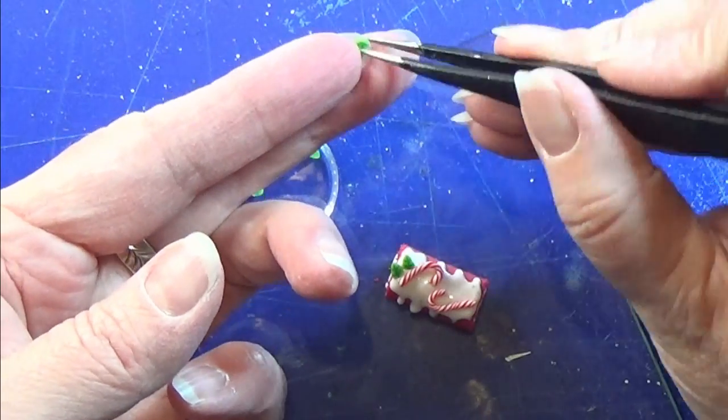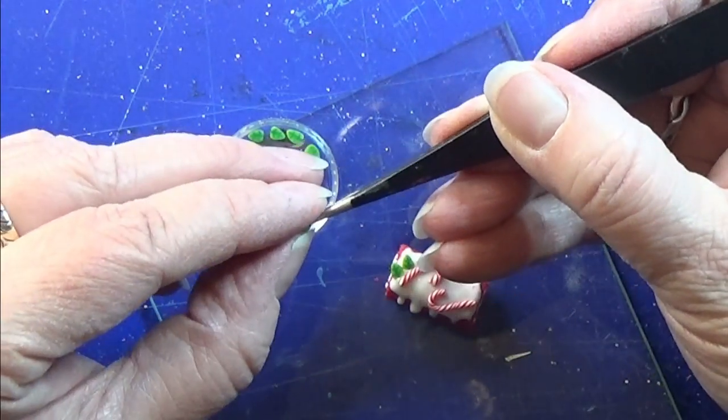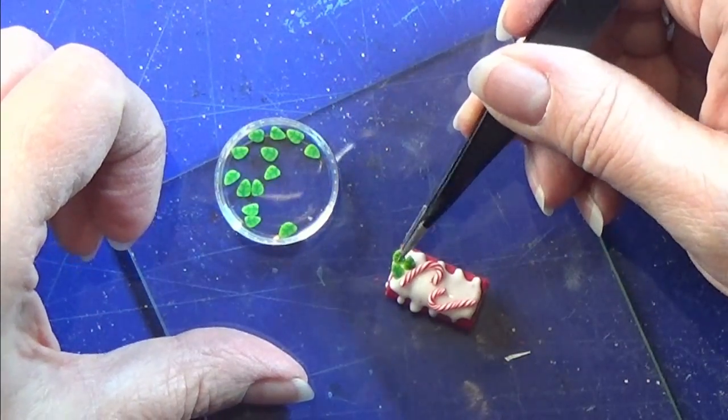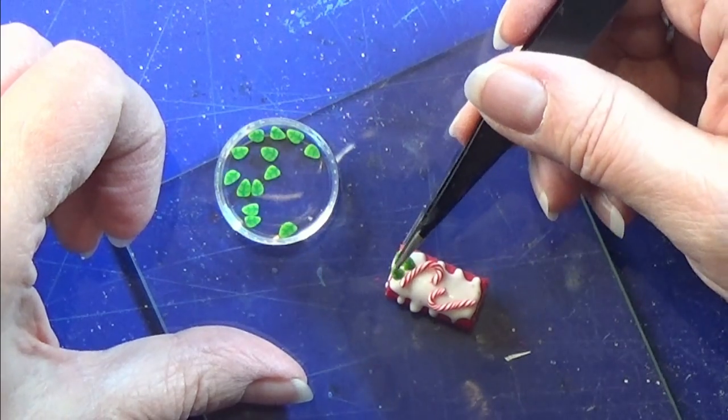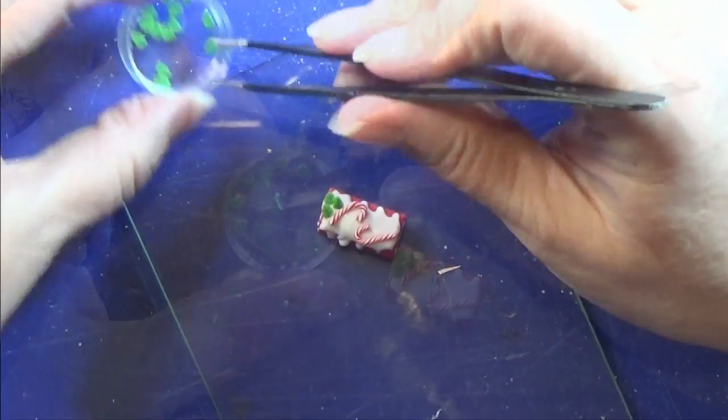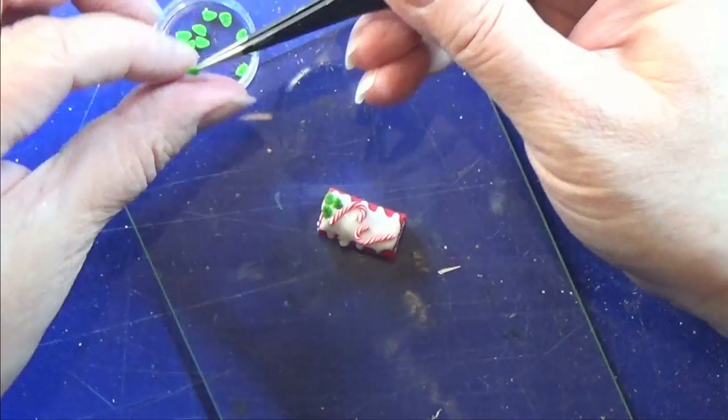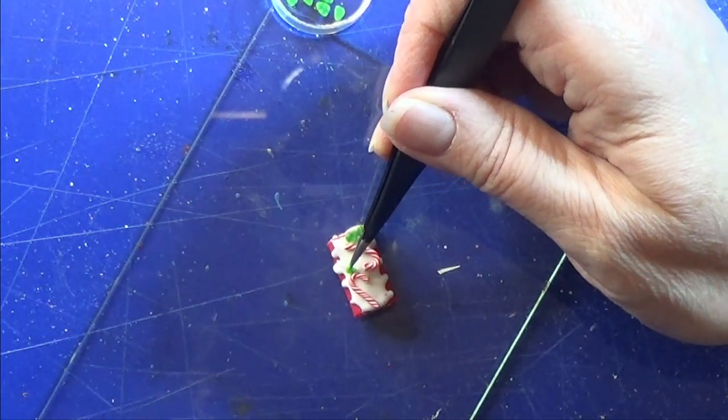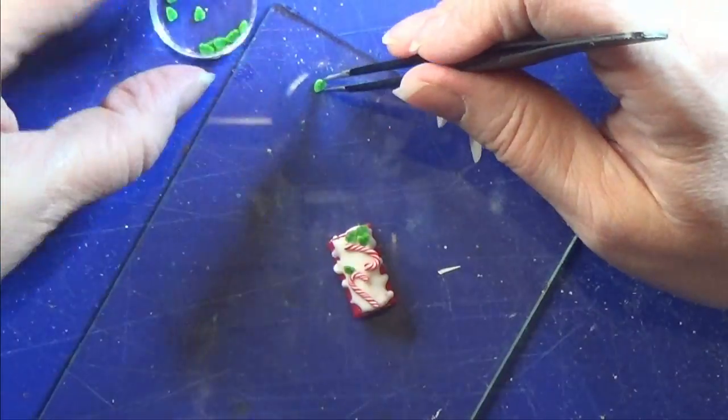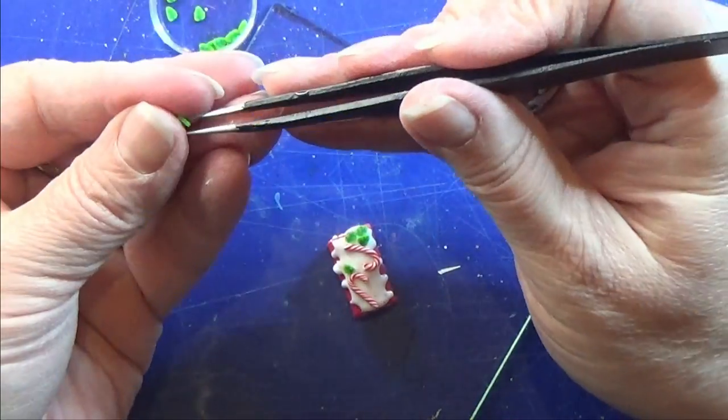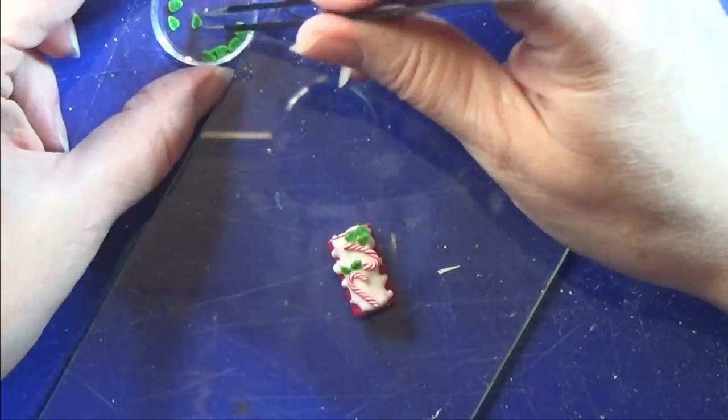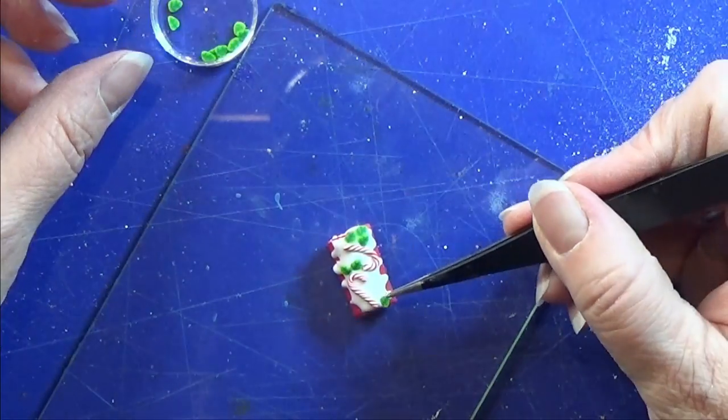Let's do the decoration now. Here I have some leaves I'm going to place, and I placed a few candy canes. I'm using different decorations for the cakes. I'll leave a link for all the decorations if you want to make them yourself.